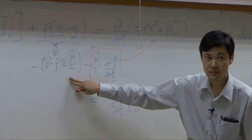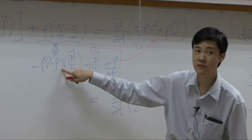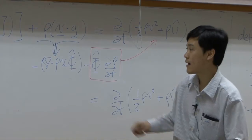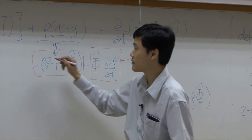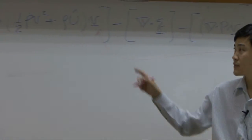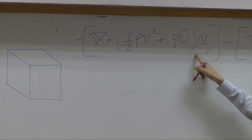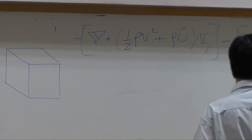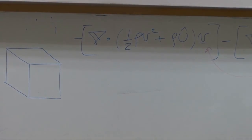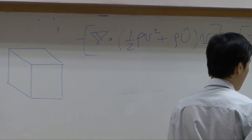For this term, on the other hand, you have del dot something times v. I'm going to bring this term over here because this term you have del dot something times v as well. You also have negative up front here and negative up front there, so it would be the common term.